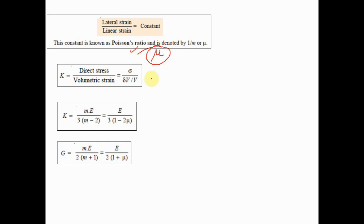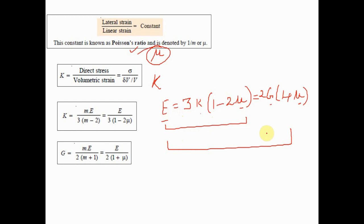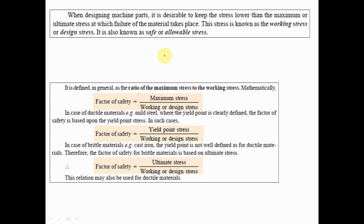Bulk modulus, denoted by capital K, is the ratio of direct stress to volumetric strain. An important relationship to remember is: E = 3K(1 − 2μ) = 2G(1 + μ), where E is Young's modulus, K is bulk modulus, G is modulus of rigidity, and μ is Poisson's ratio. These equations show the relationship between these elastic constants.